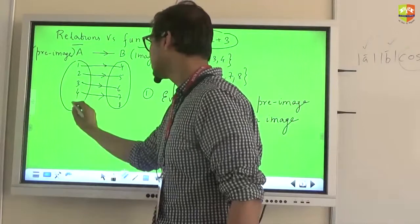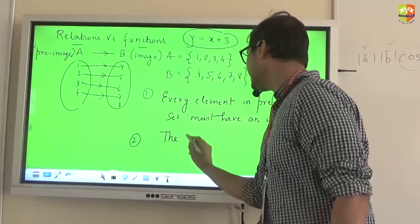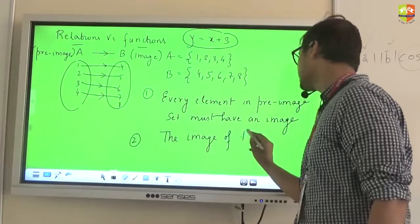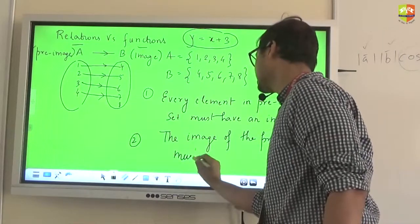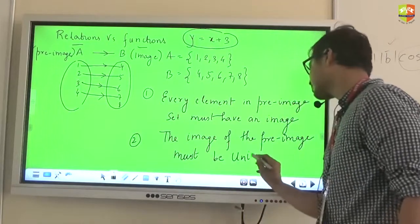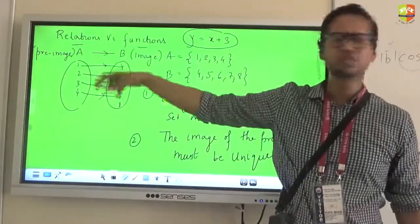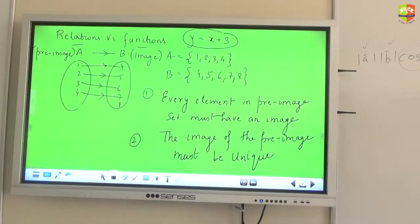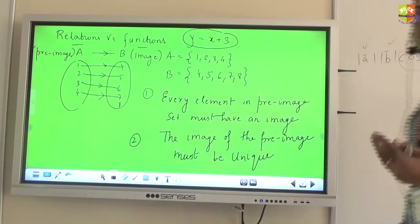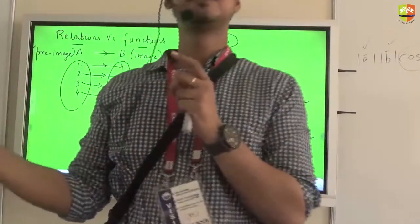Criteria number two, as mentioned, is that the image of the pre-image must be unique. That means I should not get two outputs for the same input. I should not get two answers for the same pre-image element. For example, if I put 1, it will only give me 4 — not 5, not 10, not 100. When can you have two different outputs for the same input?